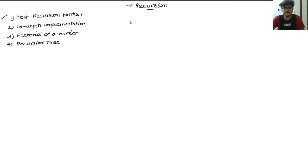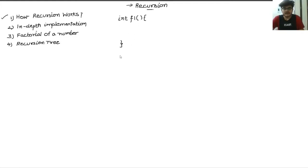The first thing you should understand is something known as a function stack. Whenever you create a function — for example, if I create a function F1 — and you call it inside the main function, at compilation time this function is allocated some memory. We call this memory a function stack.